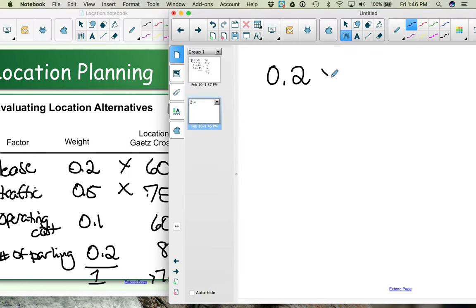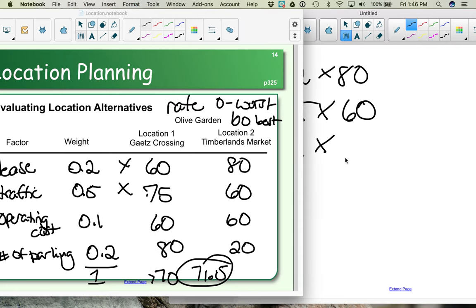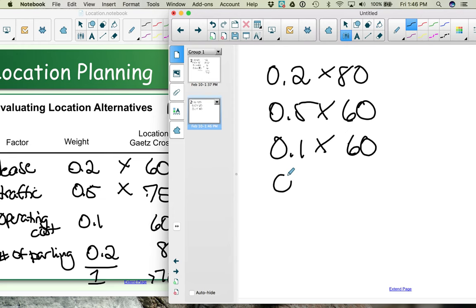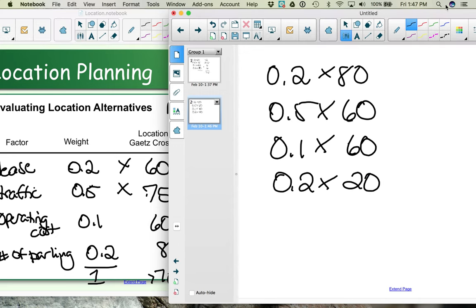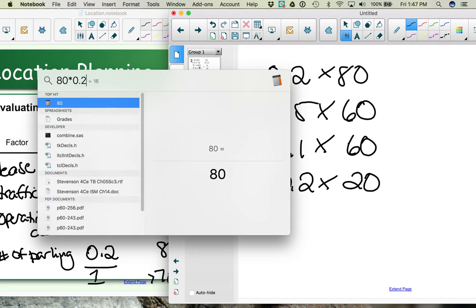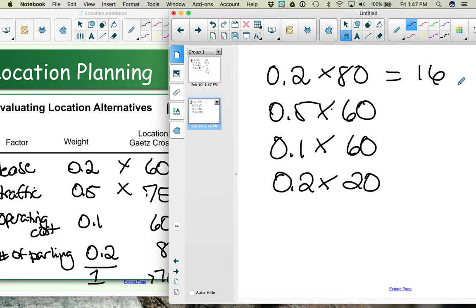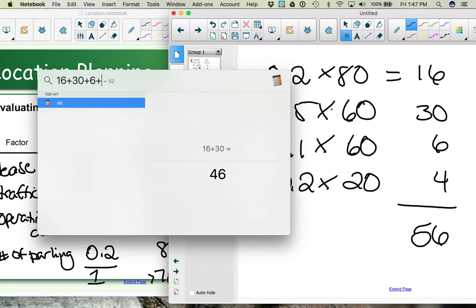So 0.2 times 80, 0.5 times 60, 0.1 times 60, and 0.2 times 20. Let's do those calculations. We have 0.2 times 80, which is 16. We have 0.5 times 60, which is 30. We have 0.1 times 60, that's 6. And we have 0.2 times 20, which is 4. As we add these up, 16 plus 30 plus 6 plus 4, we get 56.